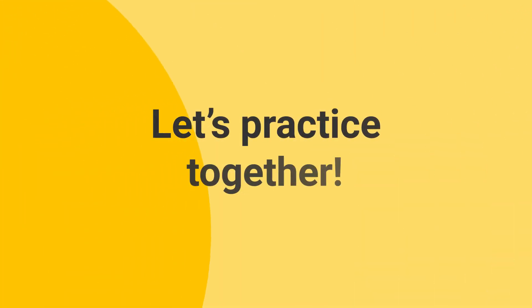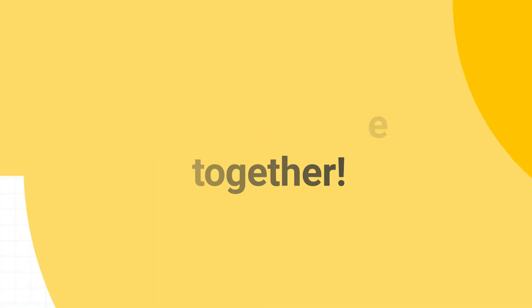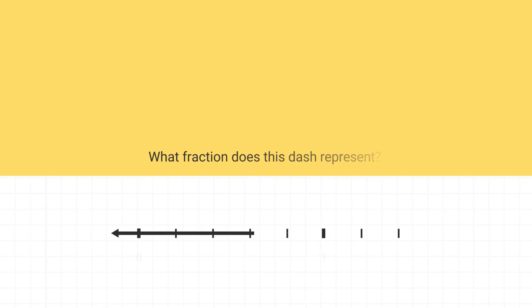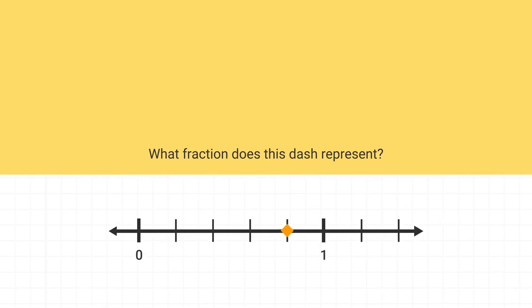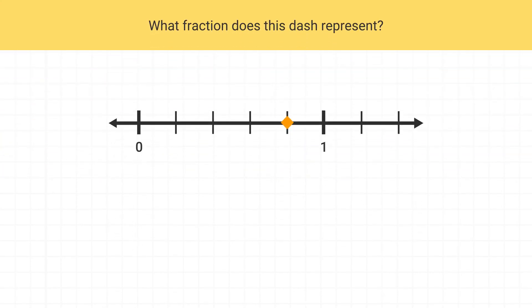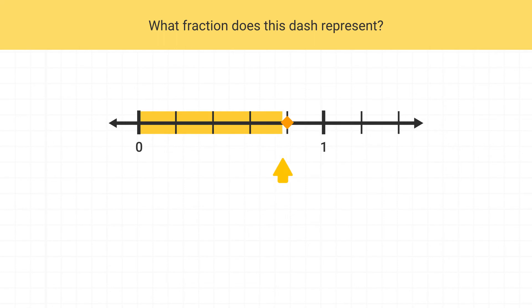Now let's practice together. What fraction does this dash on the number line represent? Remember, when we see that we're at this dash, it really means we contain everything starting at zero all the way up to the dash. Now that we visualize this, what should the numerator of my fraction be?